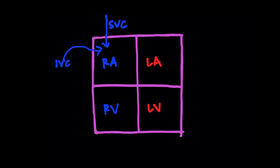The blood went through your body, dropped off the oxygen, and it's coming back, ending up in the right side of your heart. On the other side is the aorta. Once the blood goes through your lungs and gets oxygenated, it comes out of the left side of your heart and gets to your body via the aorta. But what happens in between? How does that deoxygenated blood go through your lungs and end up in the left side of the heart?